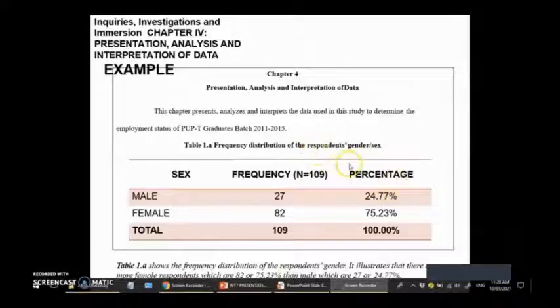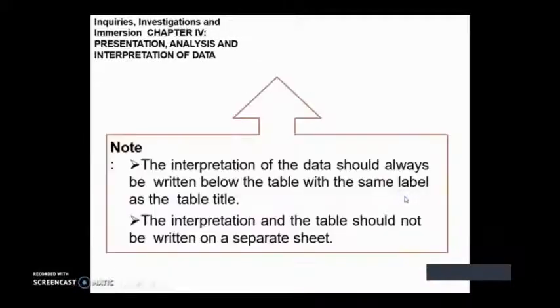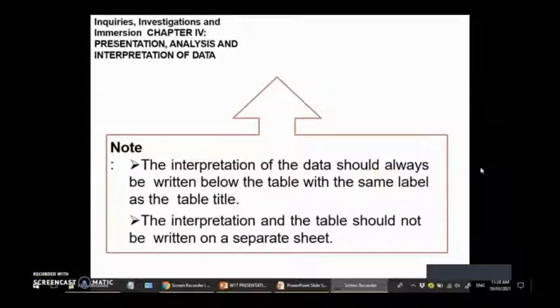We have some notes here. The interpretation of data should always be written below the table with the same label as the table title. The interpretation is always below the table, not above. And the interpretation and table should not be written on a separate sheet. As much as possible, we write them or type them in the same sheet so that the reader can understand the table clearly.